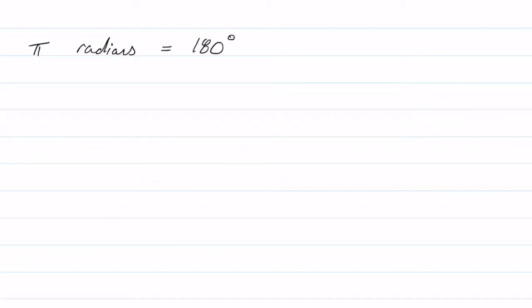So π radians equals 180° is our conversion factor. Basically, I know I'm either going to multiply by π radians over 180 or 180° over π radians.